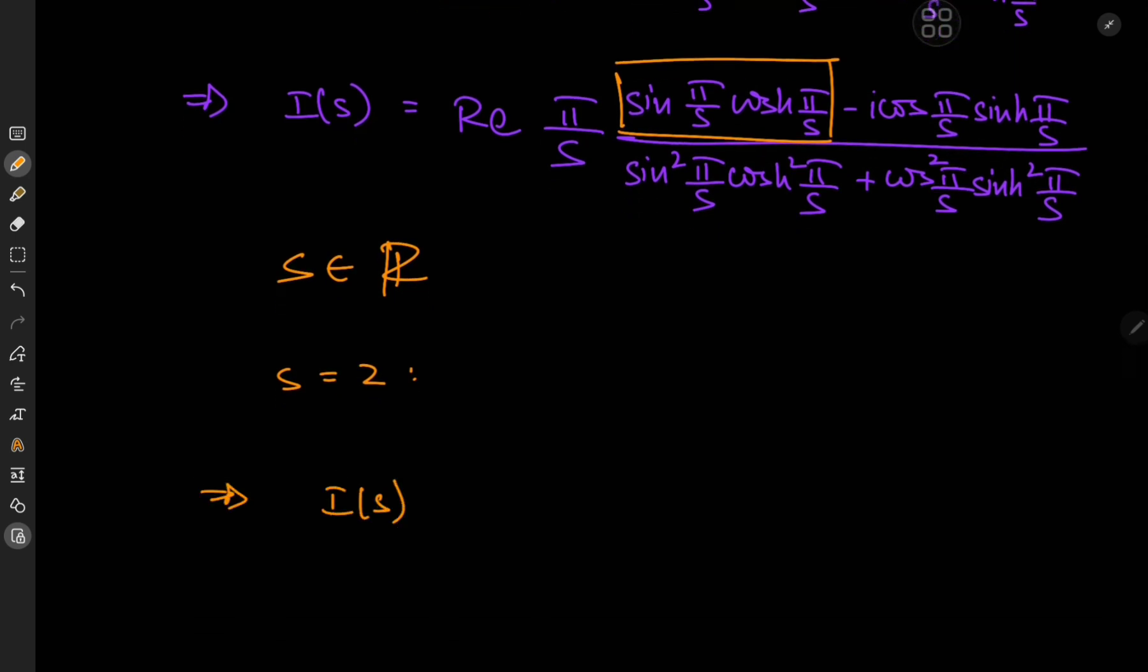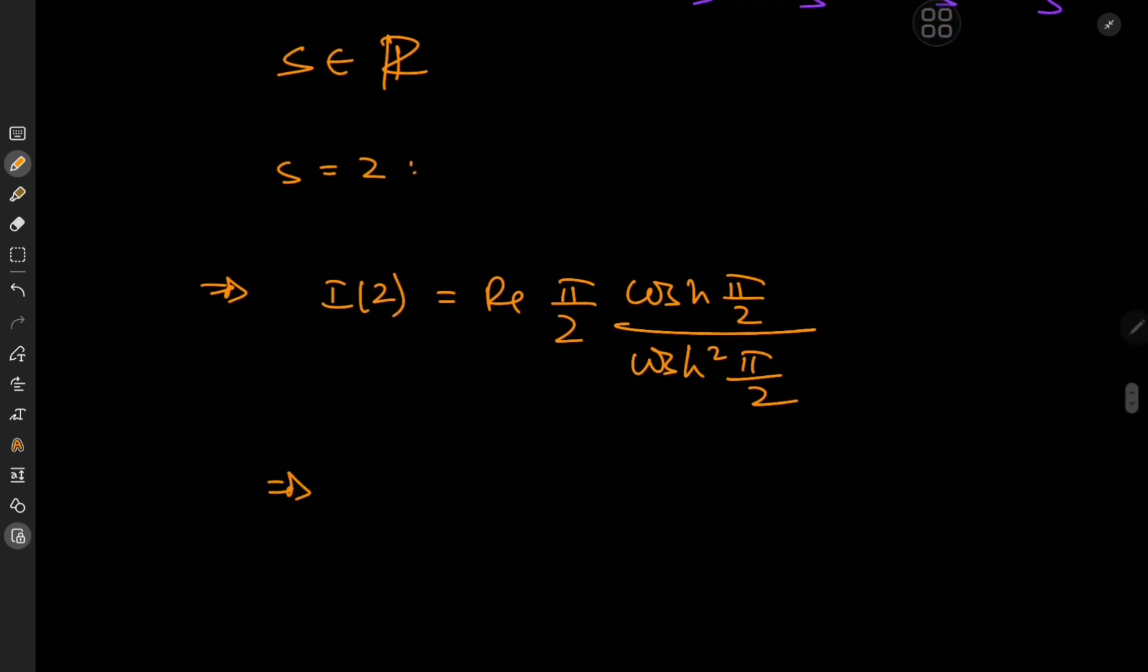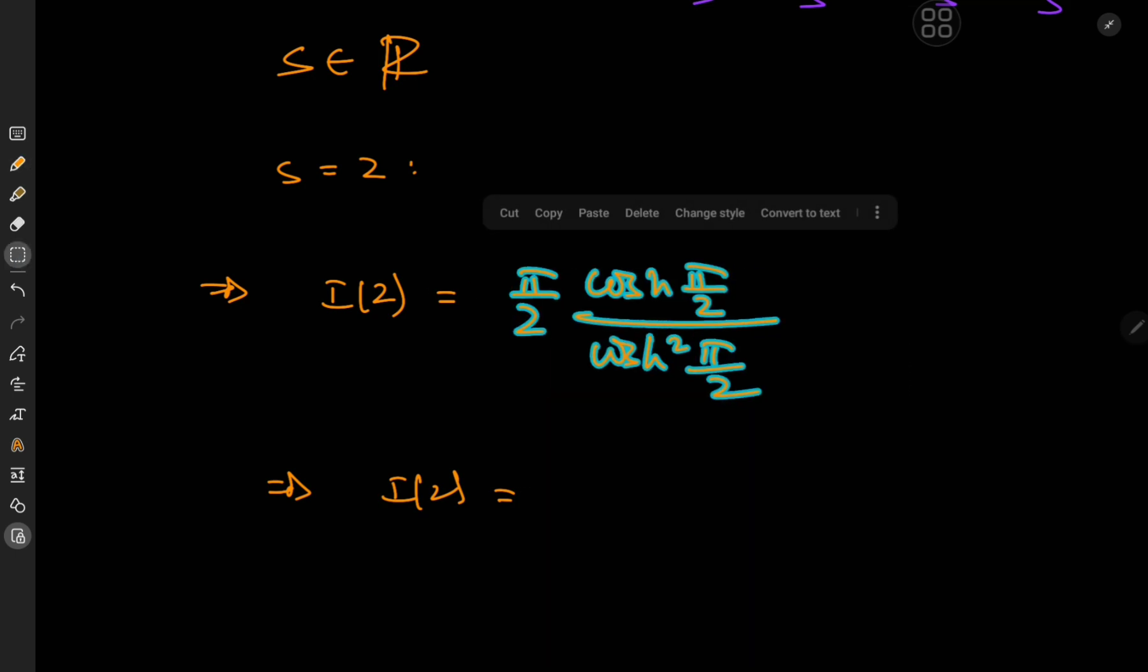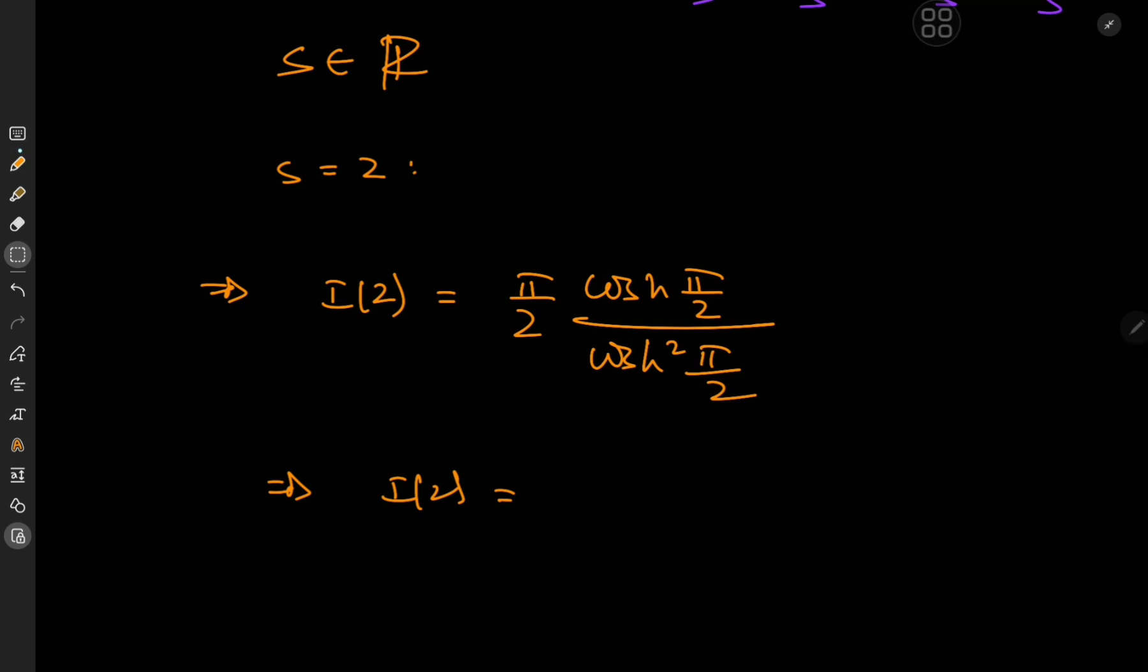We have the real part of pi by 2 times the sine of pi by 2 is 1. So we have cosh pi by 2 divided by cosh square pi by 2, where the cosine pi by 2 is upstairs and downstairs. In this case, only the one downstairs results in a 0. So this implies that i of 2, which is actually a case I evaluated explicitly before.